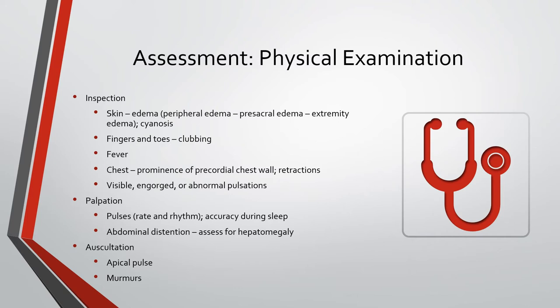After inspection, we're going to palpate the pulses, looking at rate and rhythm — the most accurate time is when the patient is sleeping. Bounding pulses may indicate patent ductus arteriosus or aortic regurgitation; thready pulses may occur with heart failure or severe aortic stenosis. Palpate the abdomen for any distension and assess for hepatomegaly. Then we're going to auscultate the apical pulse for a full minute to determine rate and rhythm, noting any irregularities, tachycardia, or bradycardia. We also want to listen for any murmurs, as those may need further evaluation.